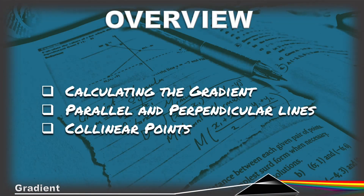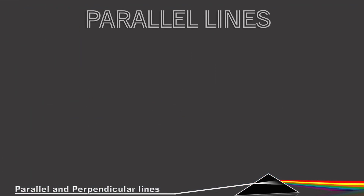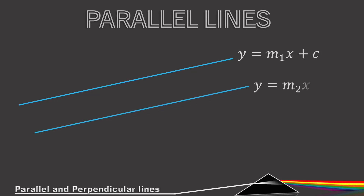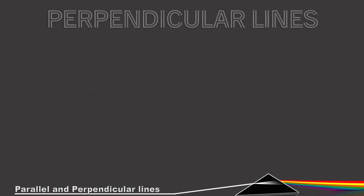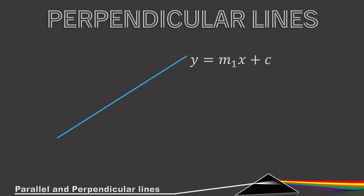Now let's look at parallel and perpendicular lines. For parallel lines, if we have y = m1·x + c and y = m2·x + c and the two lines are parallel, then their gradients are equal: m1 = m2. This makes logical sense — parallel lines have exactly the same slope, so their gradients must be equal.